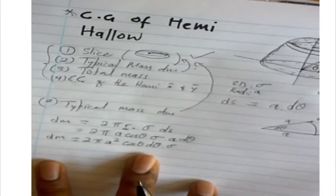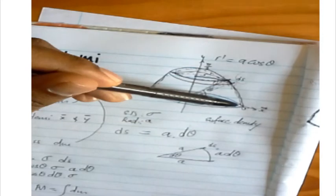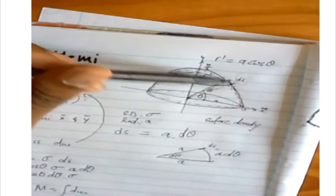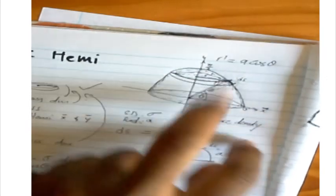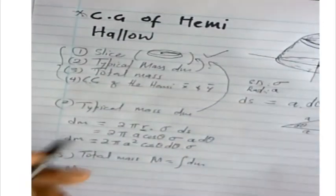Step three is to find the total mass, which equals the integral of dm. Our limits of integration go from 0 to π/2 since that is the region where θ lies. So total mass = integral from 0 to π/2 of 2π a² cos θ dθ times surface density.